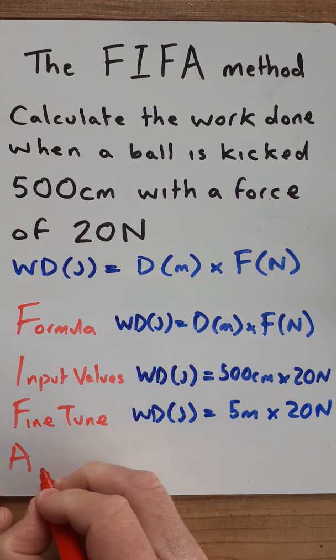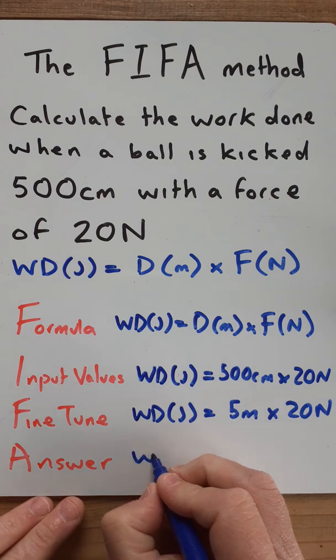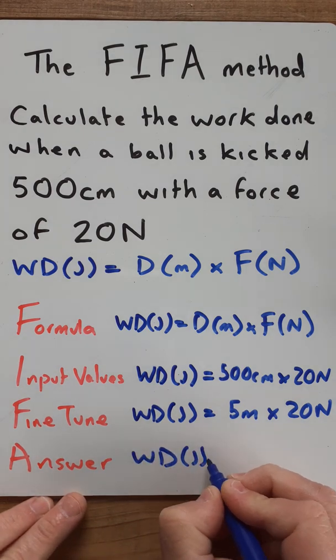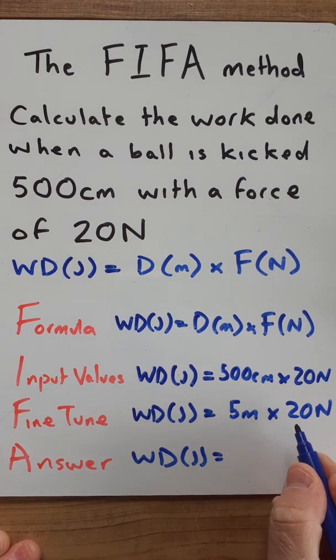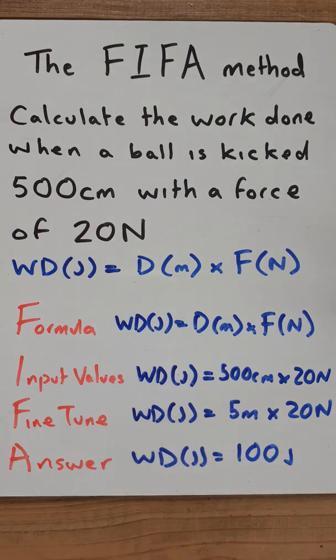The final A stands for answer and this is where we're going to write our answer. So work done is going to be equal to 5 times 20 which is 100 and the answer is 100 joules.